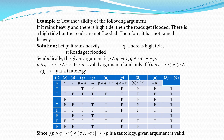Now one more example. Test the validity of the following argument: 'If it rains heavily and there is a high tide, then the roads get flooded. There is a high tide but the roads are not flooded. Therefore it has not rained heavily.' The argument is not in symbolic form, so first we assume propositional variables. We let P = it rains heavily, Q = there is a high tide, R = the roads are flooded. We do not take a separate variable for 'roads not flooded' since we can use negation of R.